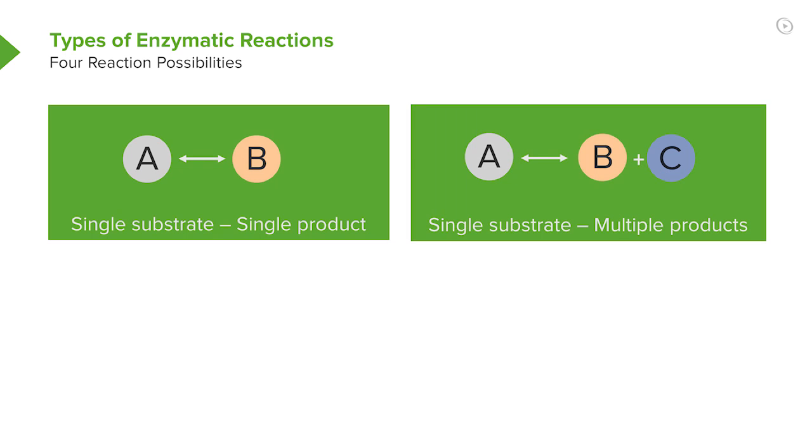We can have a reaction in which a single substrate is converted into multiple products. So, for example, if I took A and I split it into two molecules, I would make B and C.